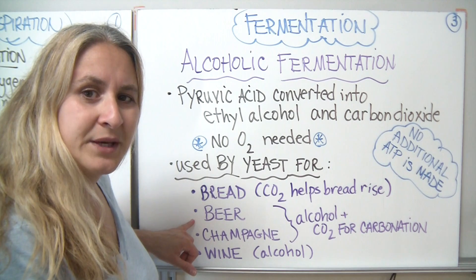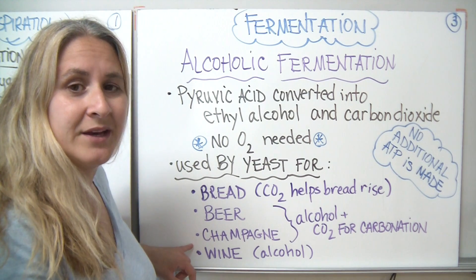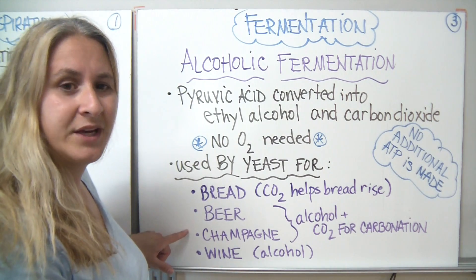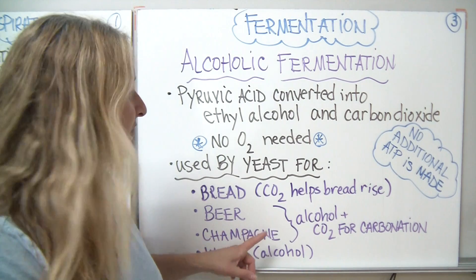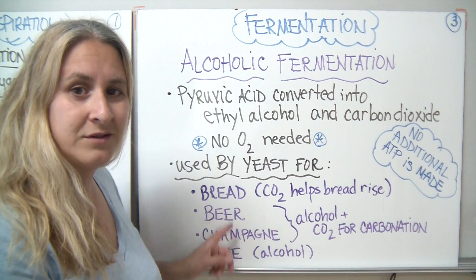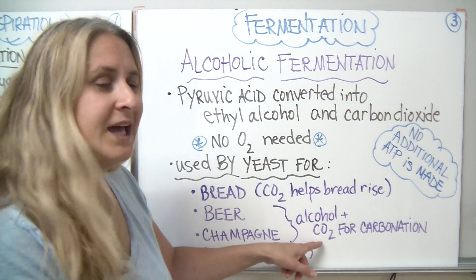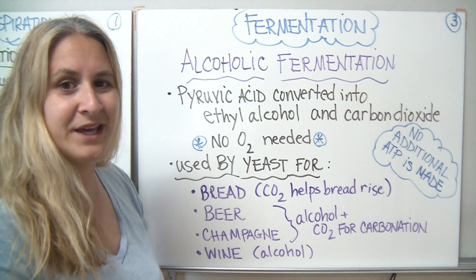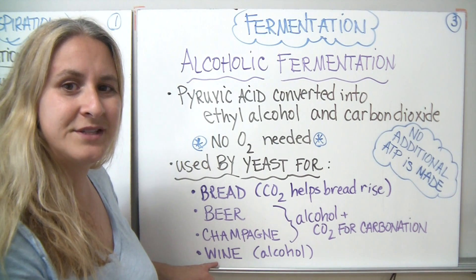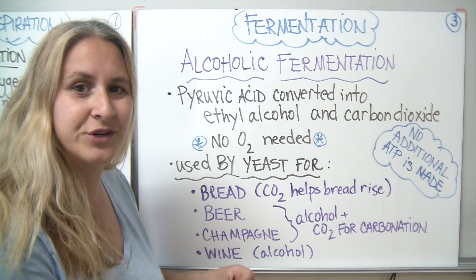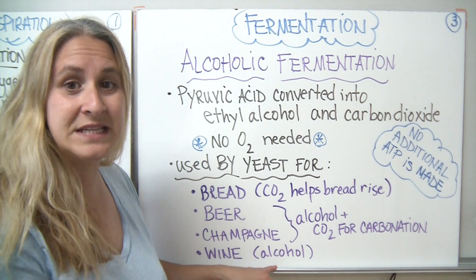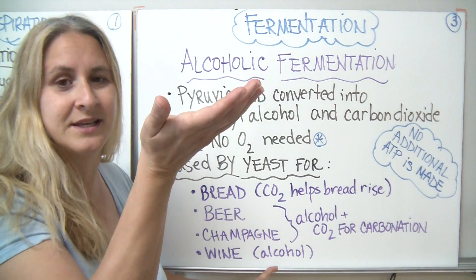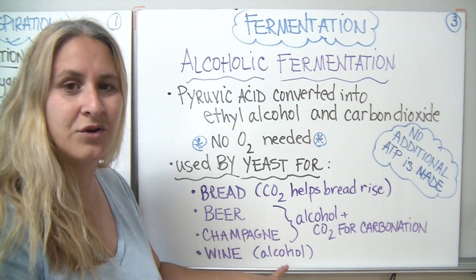We also use alcoholic fermentation to make beer and champagne. In the case of beer, we're fermenting the sugars in wheat and grains; for champagne, it's grapes. We get alcohol from this process, and we also harness the CO2 — it gets trapped during the bottling process, making the drink carbonated and bubbly. Wine, on the other hand, is a little different. You're still fermenting grapes as the sugar source, but in wine-making they're only looking to capture the alcohol. So instead of trapping the carbon dioxide, they let it escape and only capture the alcohol in the solution.